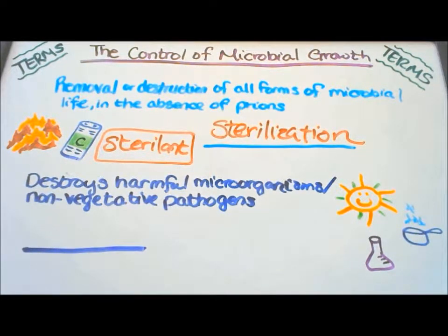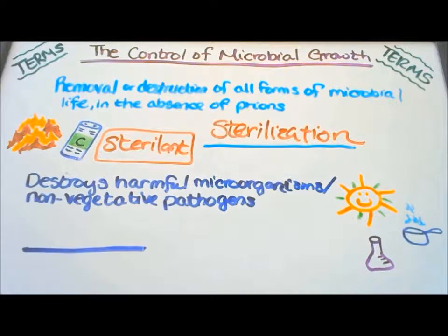In order to kill these microbes, 110 to 121 degrees Celsius is needed to sterilize the canned food.